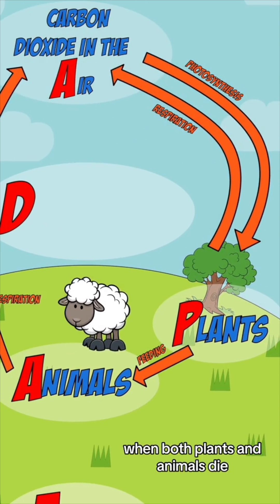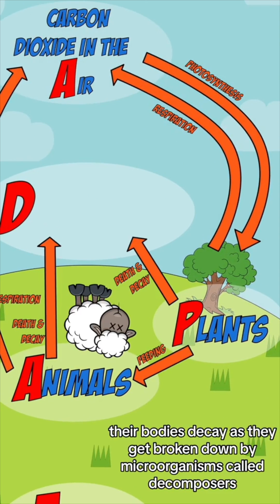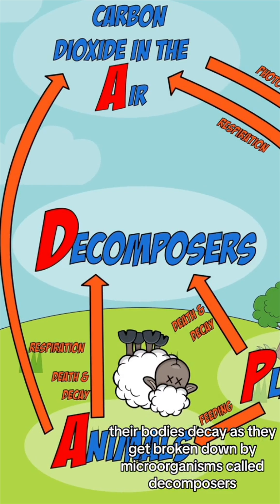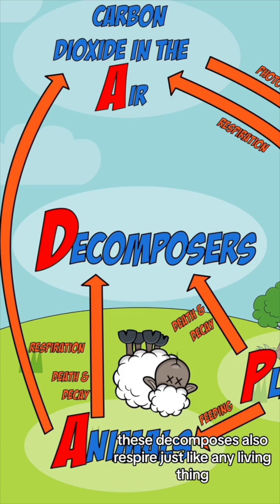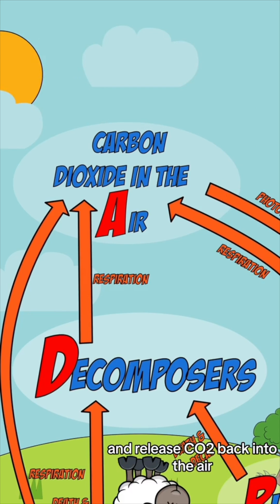When both plants and animals die, their bodies decay as they get broken down by microorganisms called decomposers. These decomposers also respire just like any living thing and release CO2 back into the air.